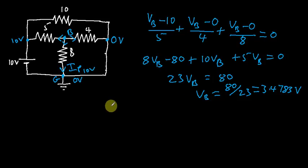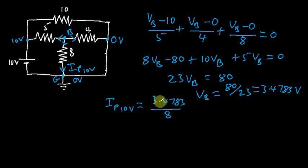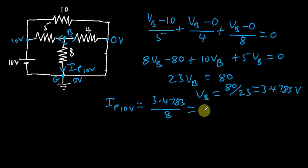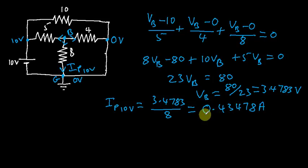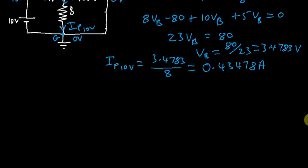Based on this, our IP_10V equals 3.4783 divided by 8 ohms — remember this term represents our IP. Doing this computation gives us IP_10V equal to 0.43478 amperes. Note that the polarity is positive. We'll keep this and now go ahead and find IP_4V.